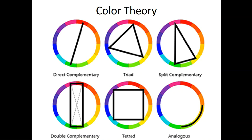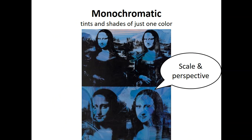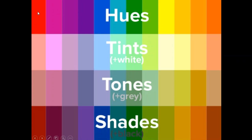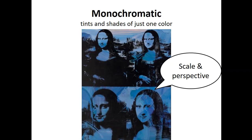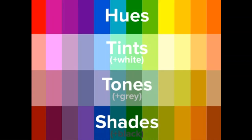Color theory is a pretty big deal. We've got complementary colors across the wheel, triad, split complementary, double complementary, tetrad, and analogous — different ways to combine colors on the color wheel. One of the four we'll focus on today is monochromatic. Mono means one, chrome means color — so monochromatic is when you use tints and shades of just one color. Tints are when you add white, tones when you add gray, and shades when you add black.